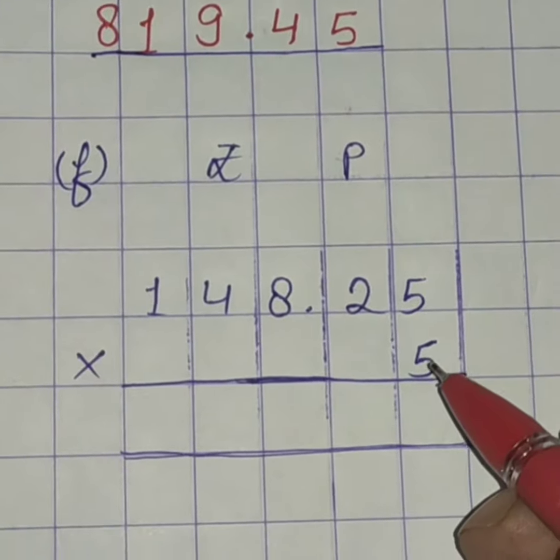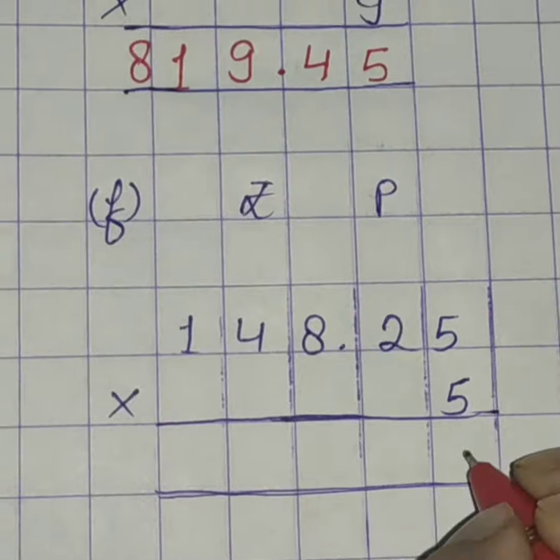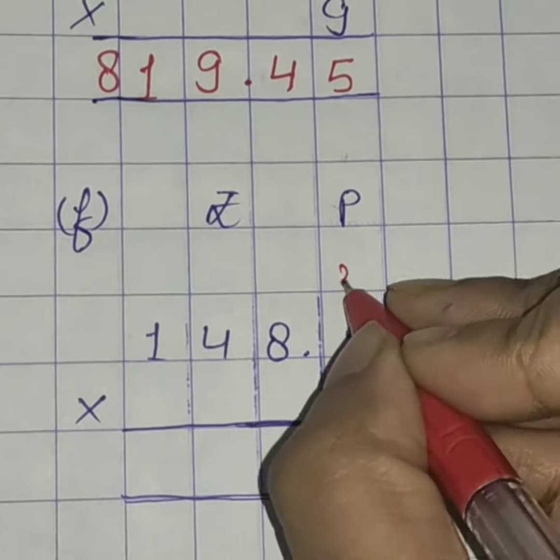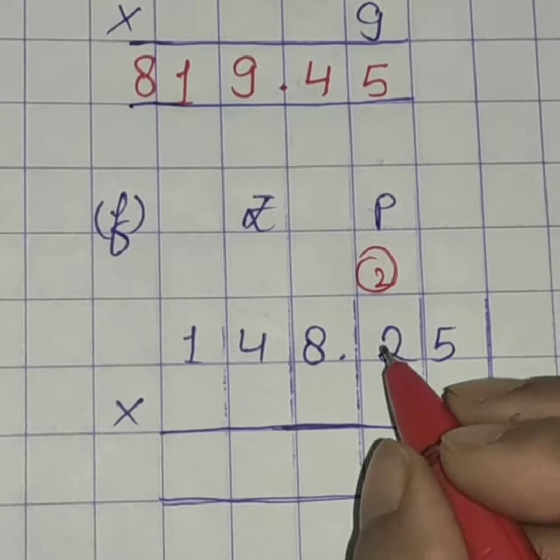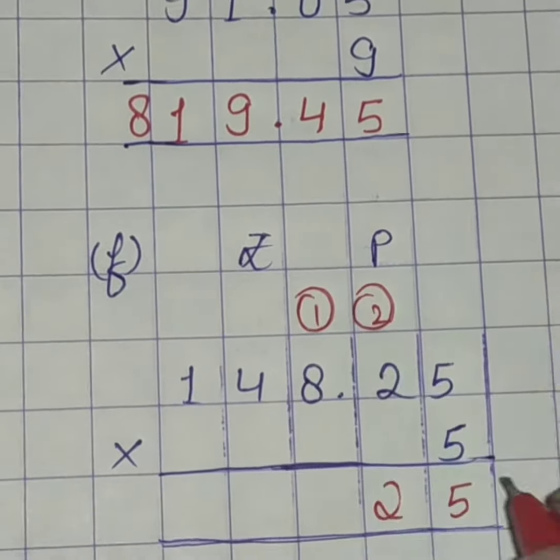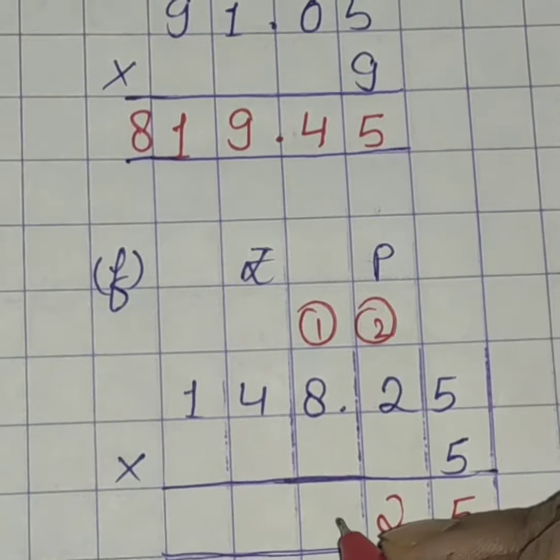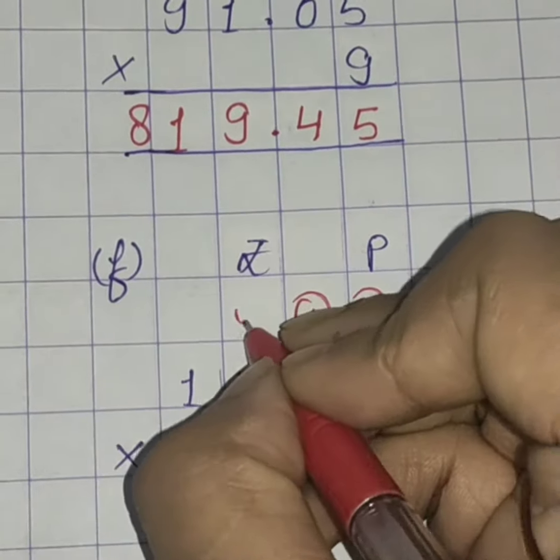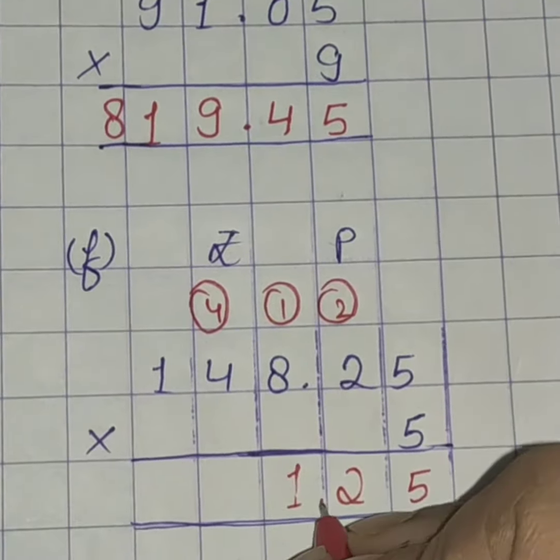Come to F1. 5, 5's are 25. 5 here, 2 as a carryover. 5, 2's are 10. 10 plus 2, 12. 2 here, 1 as a carryover. 5, 8's are 40. 40 plus 1, 41. 1 here, 4 as a carryover. Don't forget to write dot.